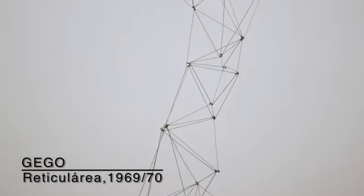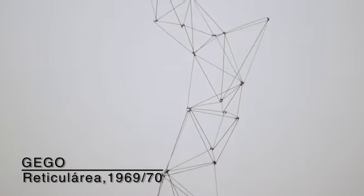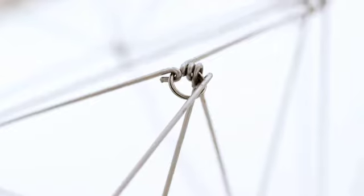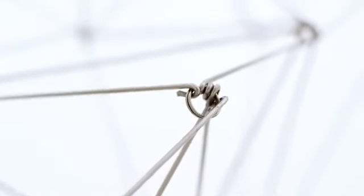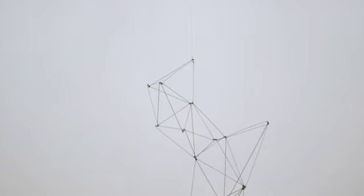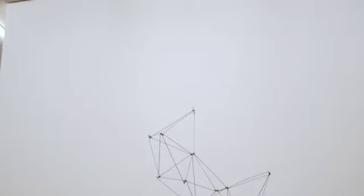This is a wonderful work by the Venezuelan artist Giego, from her Reticularia series from 1969 and 1970. She's weaving together pieces of thick metal wire in these triangular shapes that create this long sculpture hanging from the ceiling. She's playing with traditional notions of sculpture — of form and volume — but here creating sculpture through the use of line.